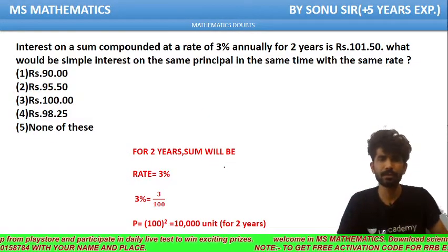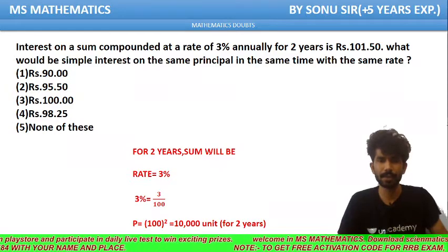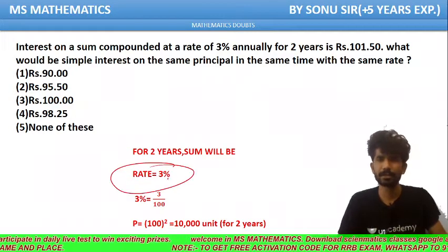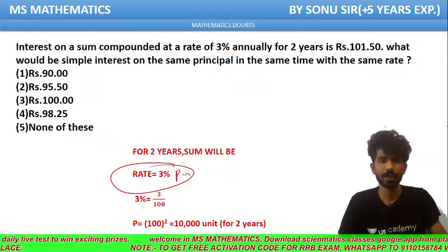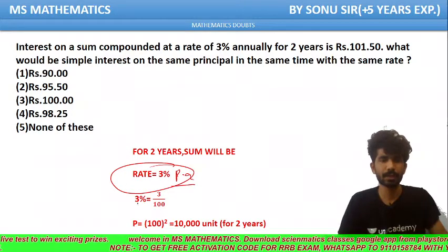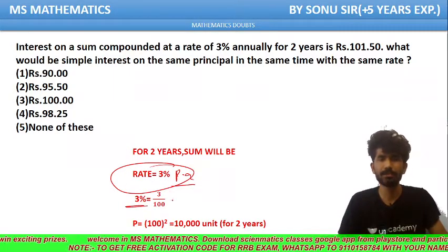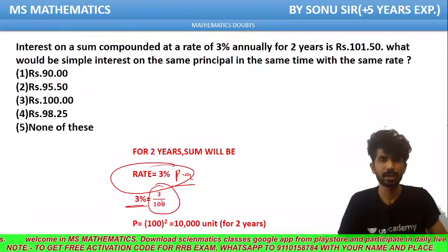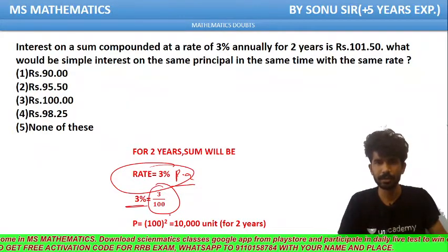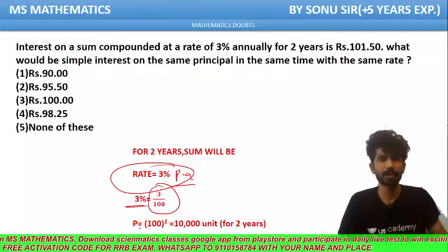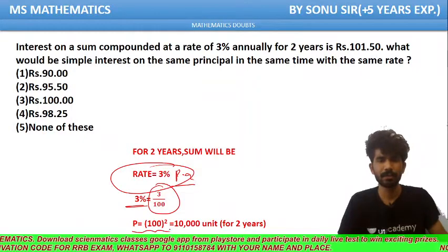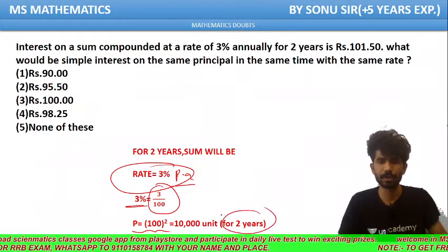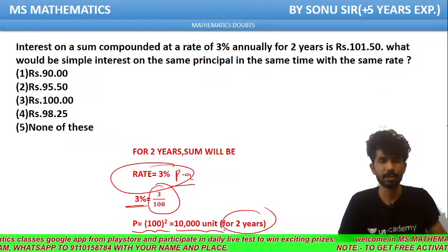Now first, we have to find the principal by using the ratio method. We have been given the rate of 3% per annum, so we have to change 3% into a ratio. In ratio form, it can be written as 3 upon 100. Now we calculate the principal: P is equal to 100 squared for 2 years, which equals 10,000 units.